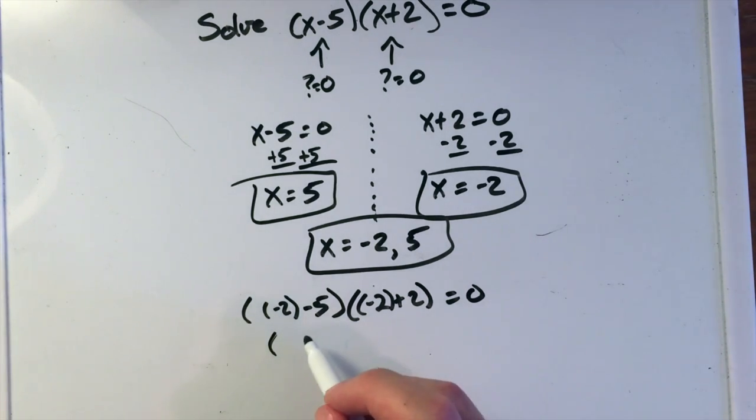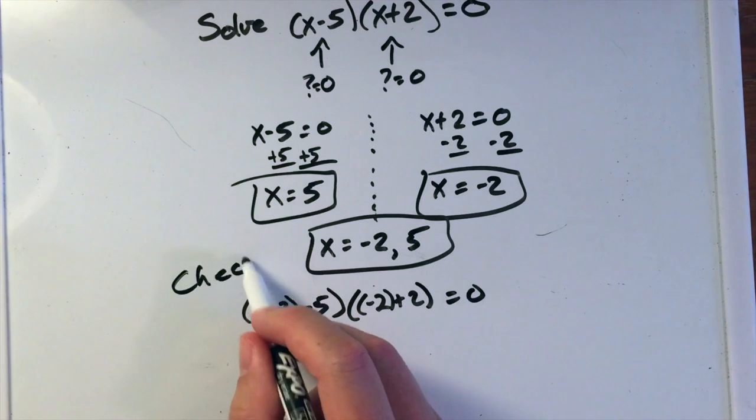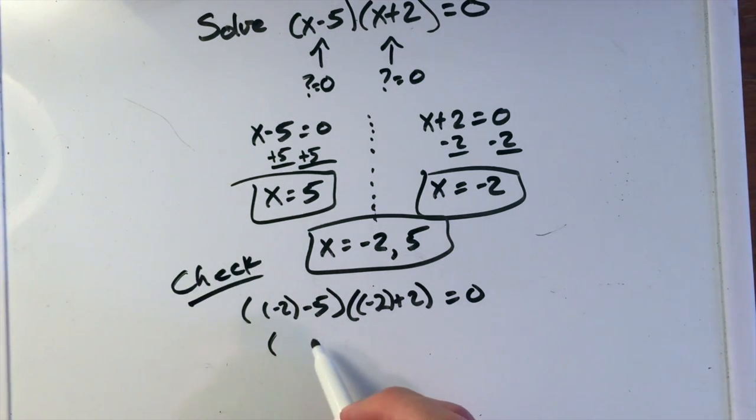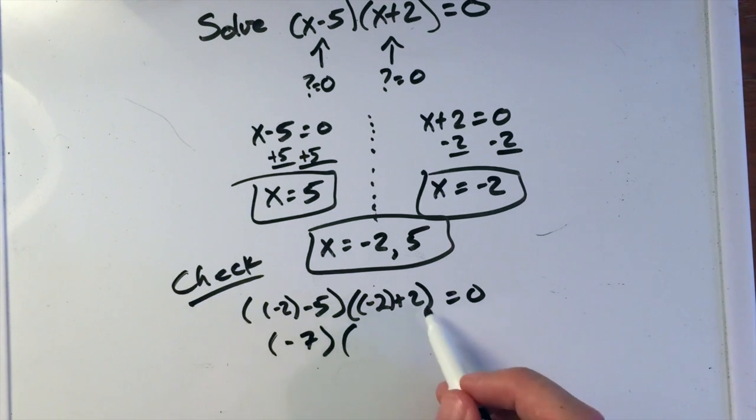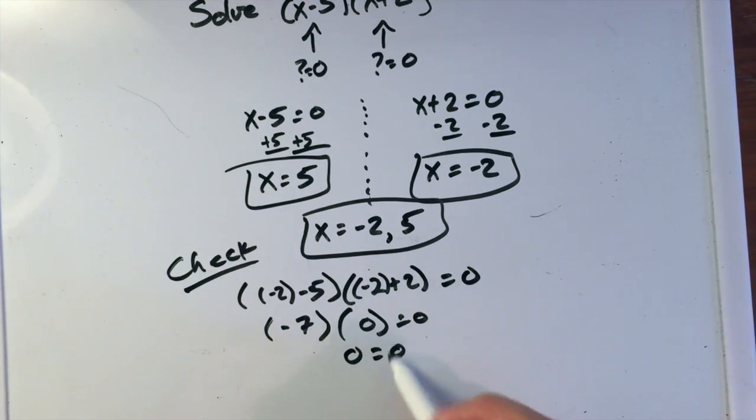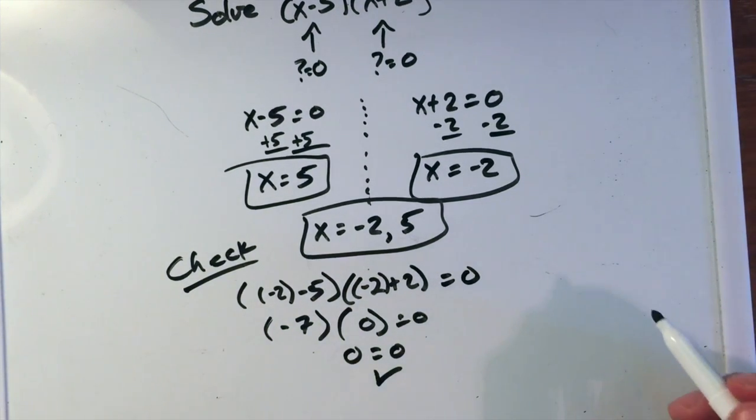We have negative 2 minus 5. Well, that equals our check, by the way. Negative 2 minus 5 is negative 7, times negative 2 plus a positive 2 is 0, equals 0. And we know that negative 7 times 0 is, in fact, 0. We're good. They're the same on both sides.